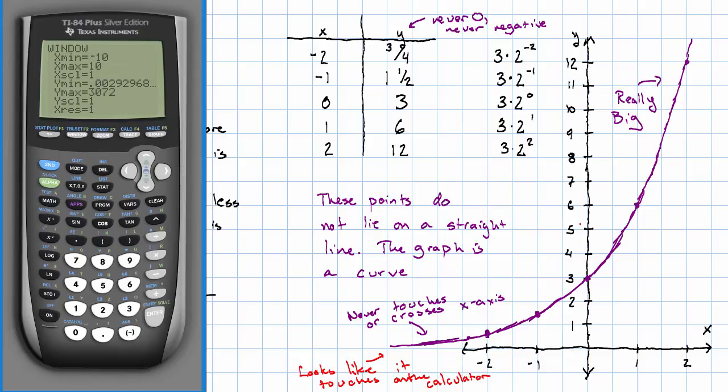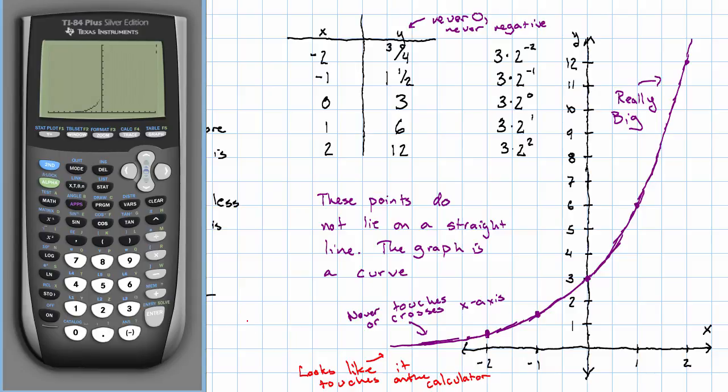If I set my y's back to what I had on this graph, y only going up to 12. Here we see the shape of the graph we're looking at here. Off to the left, it gets really, really close to the x axis. And off to the right, the graph is off screen because it's so big. Okay, so this is what the graph of this exponential relationship looks like.